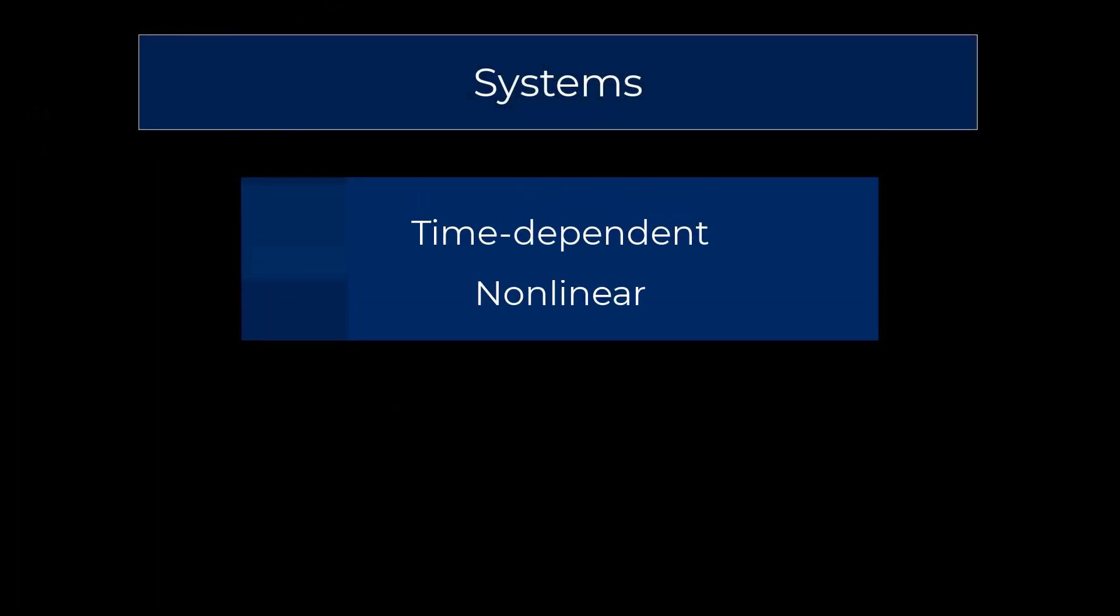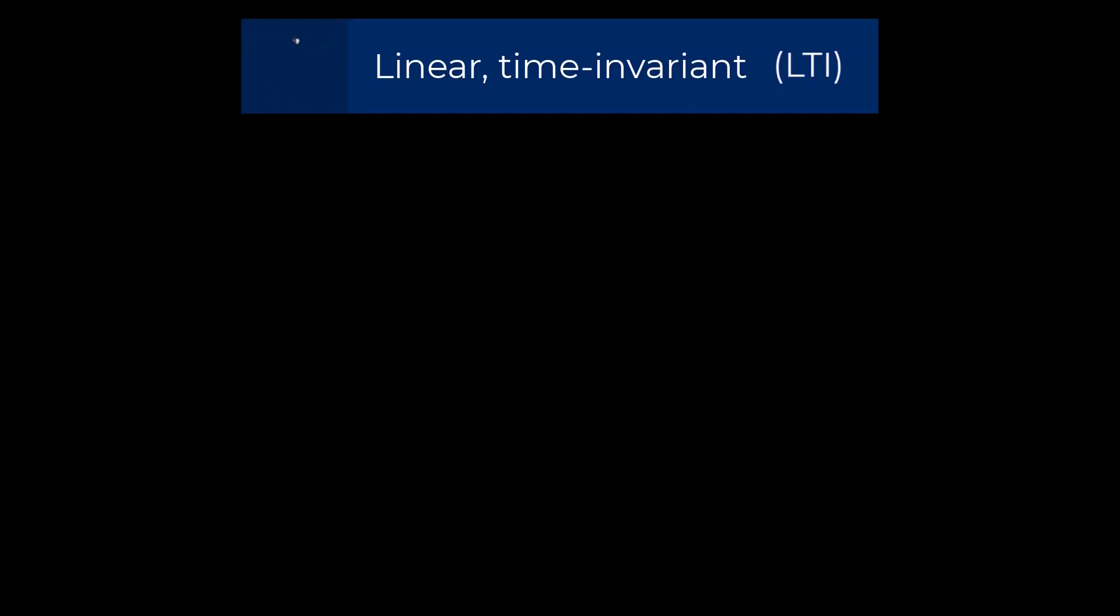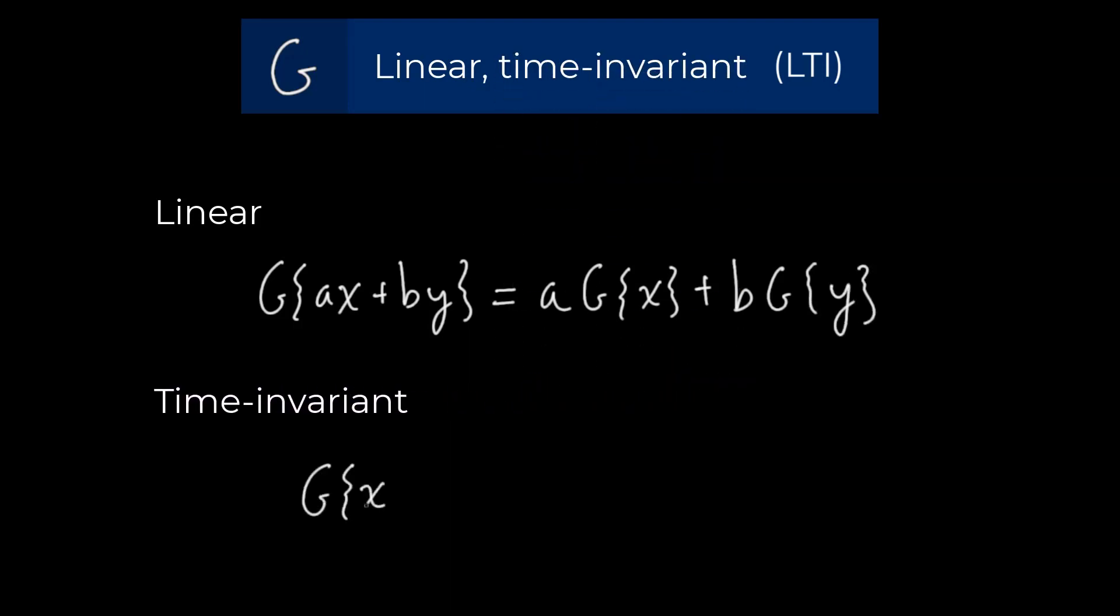It's worth noting here that Bode diagrams aren't valid for any system. They are only valid for linear time-invariant systems, usually abbreviated LTI. A linear system requires that the effect of the system applied to separate signals is equivalent to the linear combination of the signals affected separately. Time invariance requires that the effect of the system on an equal input signal at a later time will be the same.